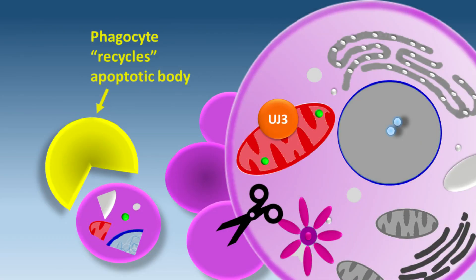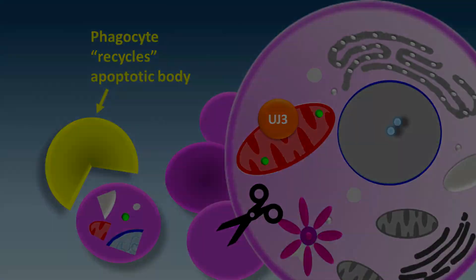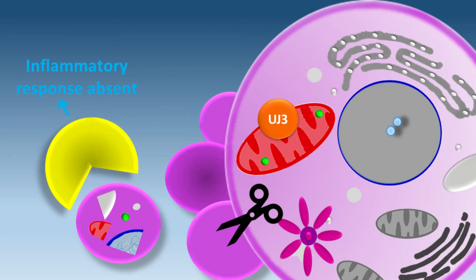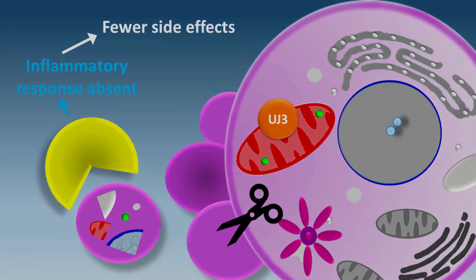The traveling scavenger cells, the phagocytes, shown here in yellow, can then chomp up and recycle the packets. When a cell dies with the apoptosis process, its contents don't contaminate and poison the healthy cells around it, so no inflammation and no immune response occurs, and the chemotherapy creates fewer side effects.